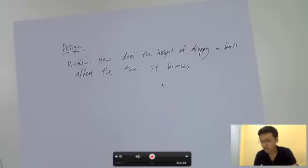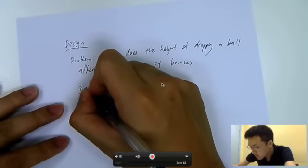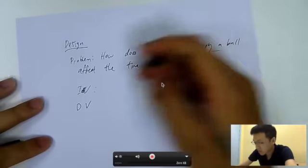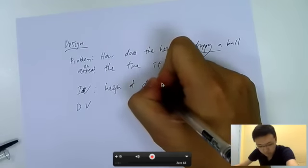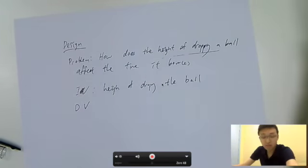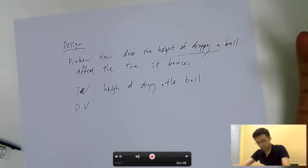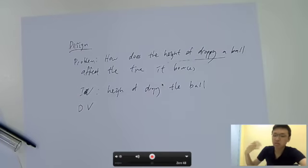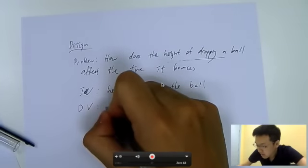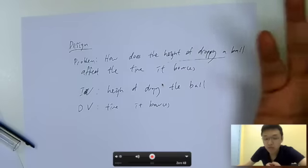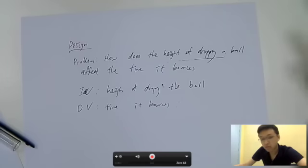Next, identify all the relevant variables — the independent variable and the dependent variable. The independent variable is the height of dropping the ball. You should state something like: we will test five different heights — 10 cm, 20 cm, 30 cm, 40 cm, and 50 cm. The dependent variable is the time it bounces. You can say: we will use a stopwatch to measure this in seconds.